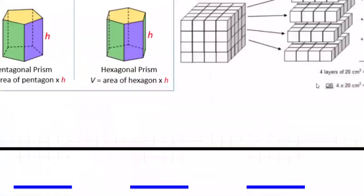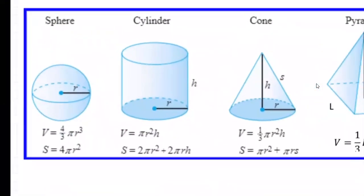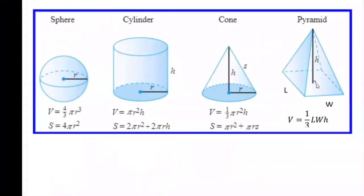And then cone, there's our cone volume, one third pi r squared h.